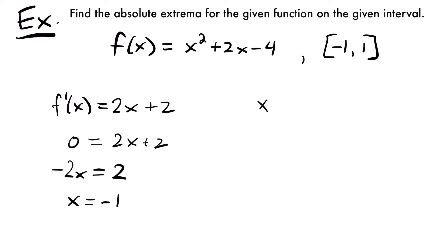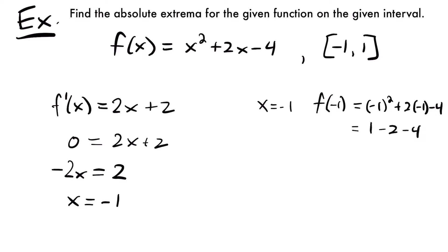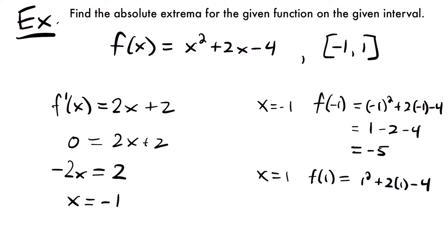So we'll start by checking x equals negative 1. If we plug in negative 1 into our function, we get negative 1 squared plus 2 times negative 1 minus 4, which equals 1 minus 2 minus 4, giving us negative 5. And if we plug in positive 1 into our original function, we get 1 squared plus 2 times 1 minus 4, which is 1 plus 2, that's 3 minus 4, giving us negative 1.